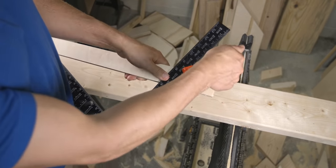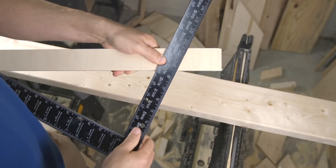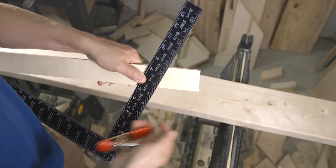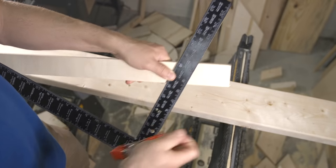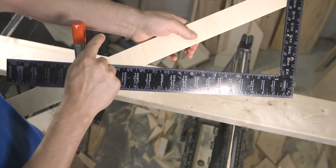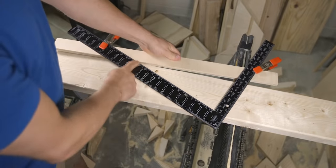To set up for a common rafter line up the six mark on the tongue side with the edge of your wood. This represents the pitch or rise. Then line up the 12 inch mark with the other side and clamp it in place. Again this represents our run.